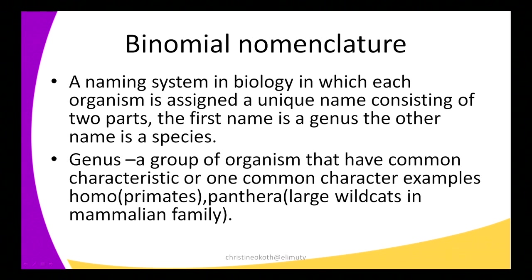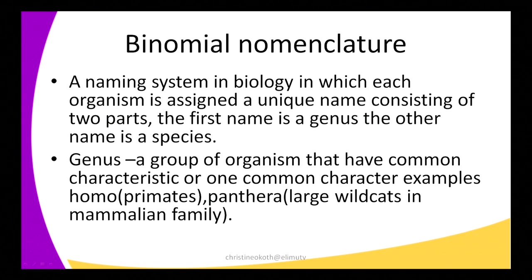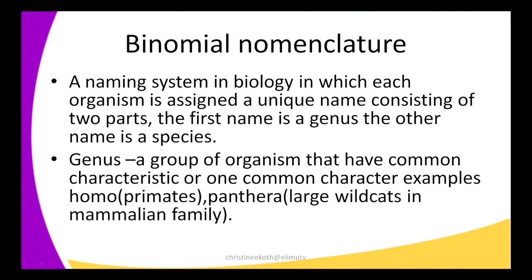What are genus and species? A genus is a group of organisms that have common characters. For example, we have the genus Homo — Homo sapiens, Homo habilis, and Homo erectus — all are primates. Then we have another example of a genus called Panthera. These are the large wild cats in the mammalian family, for example jaguars and leopards — all of these we call pantheras.